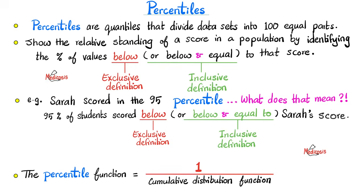So what's the definition of percentiles? Percentiles are quantiles that divide data sets into 100 equal parts. Per cent means per 100. That's why we have 100 cents in the dollar. A Roman centurion was a commander of 100 legionnaires, and there are 100 years in a century, and 100 centimeters in the meter. And that's why we have the first percentile, the second percentile, third, fourth, fifth, 99th, all the way up to 100.